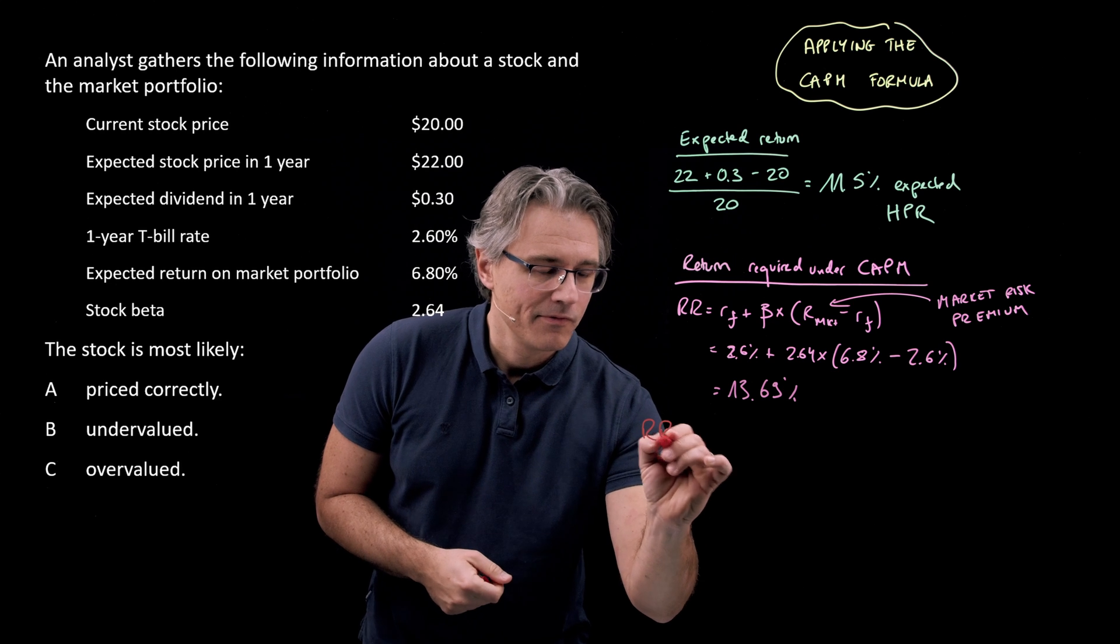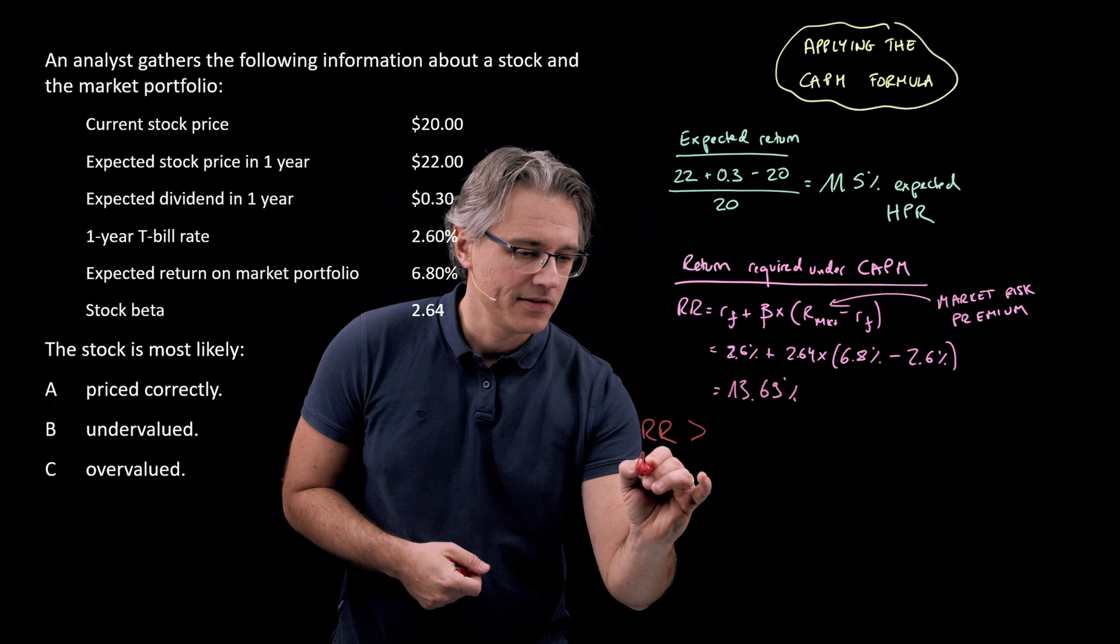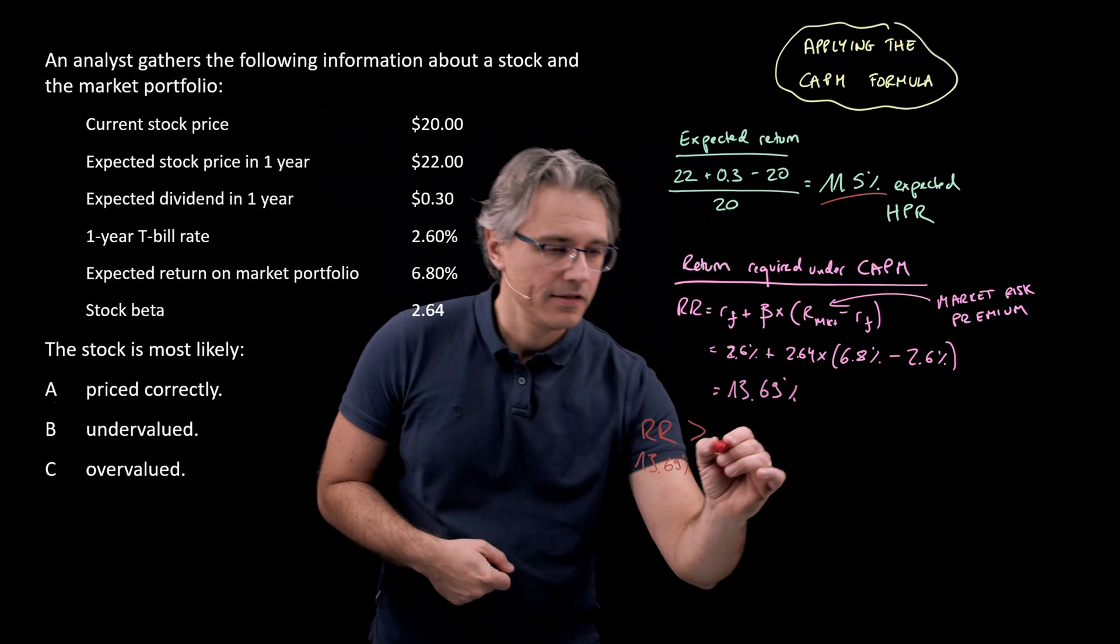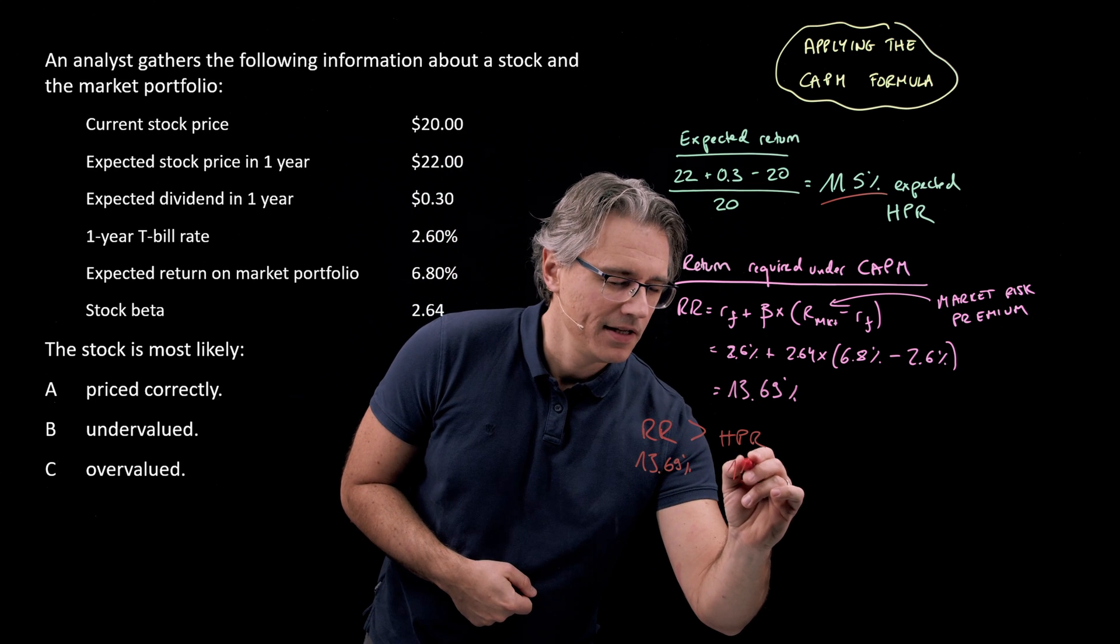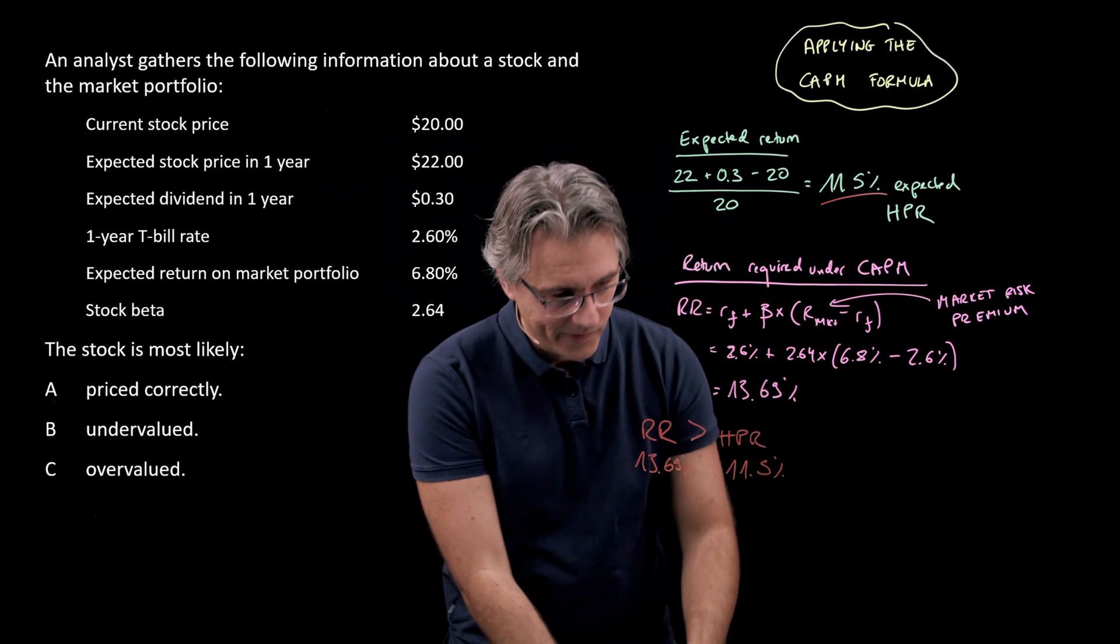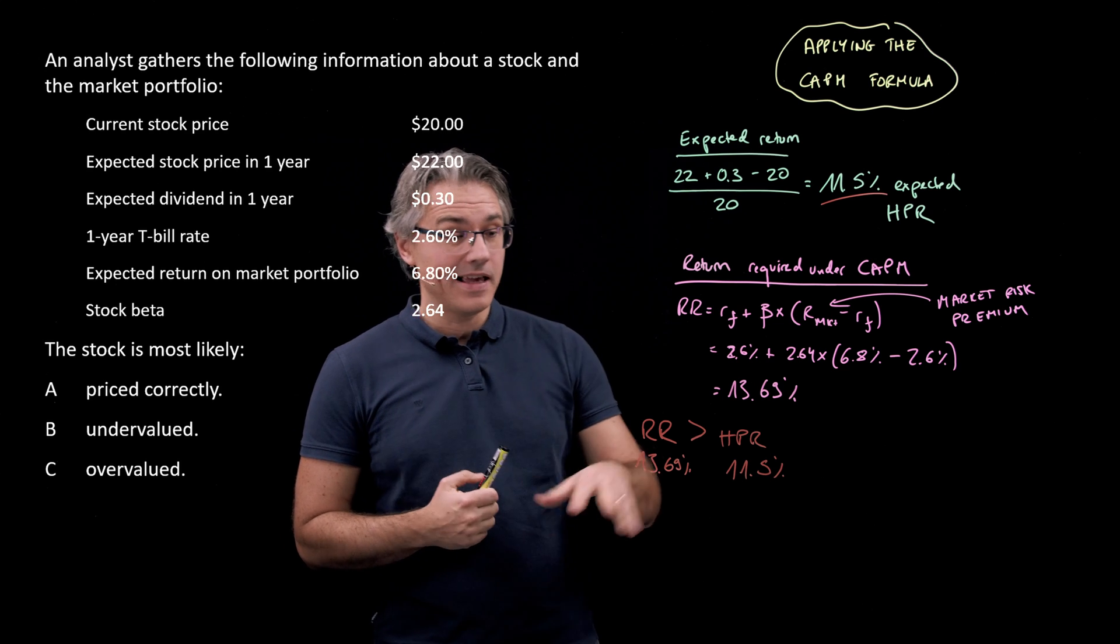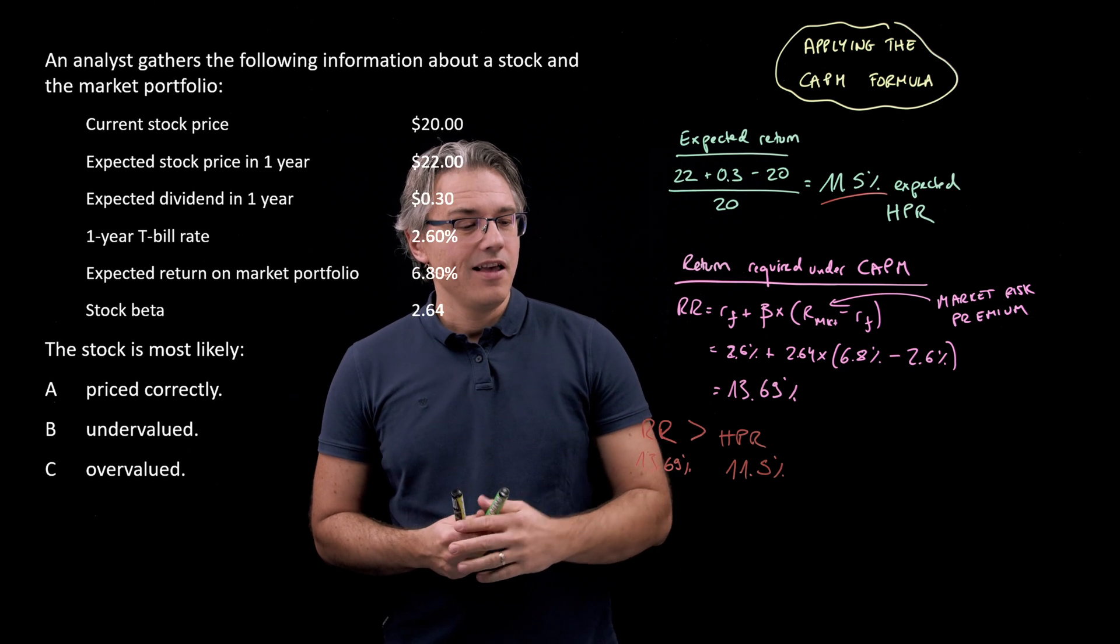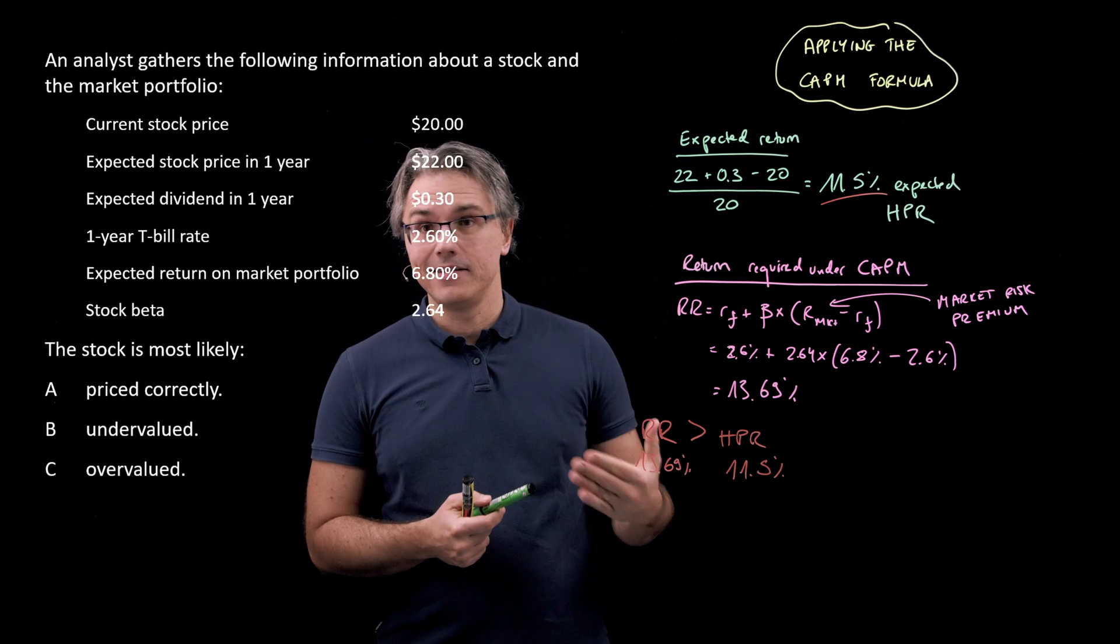Obviously, the rate of return required by the CAPM model is definitely higher because it's 13.69% than this holding period return or expected holding period return, which was just 11.5%. And what does this tell you? Well, this stock unfortunately will not generate a yield in accordance with our forecast or expectations which is enough to compensate us for the risk that it exposes us to.